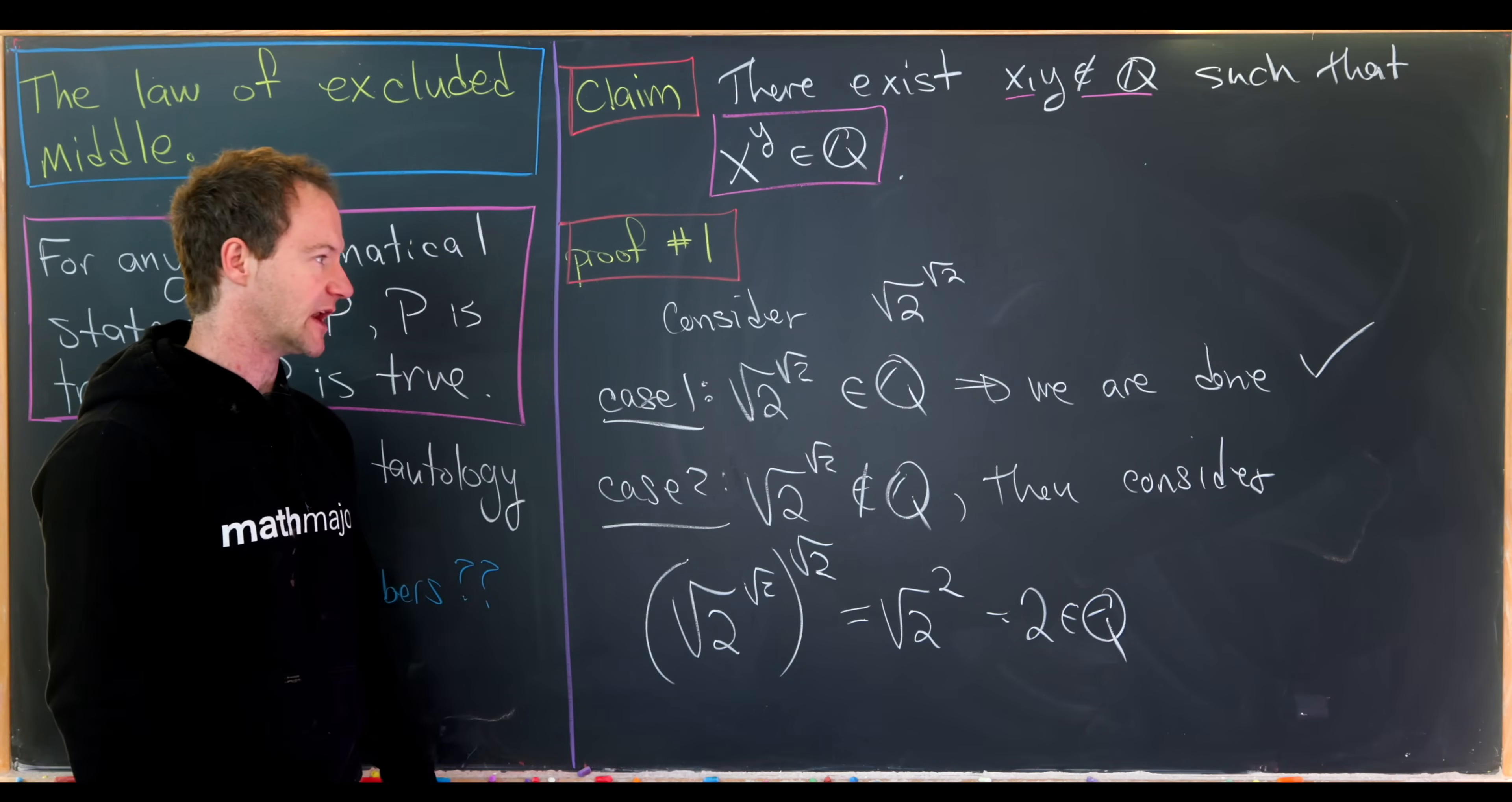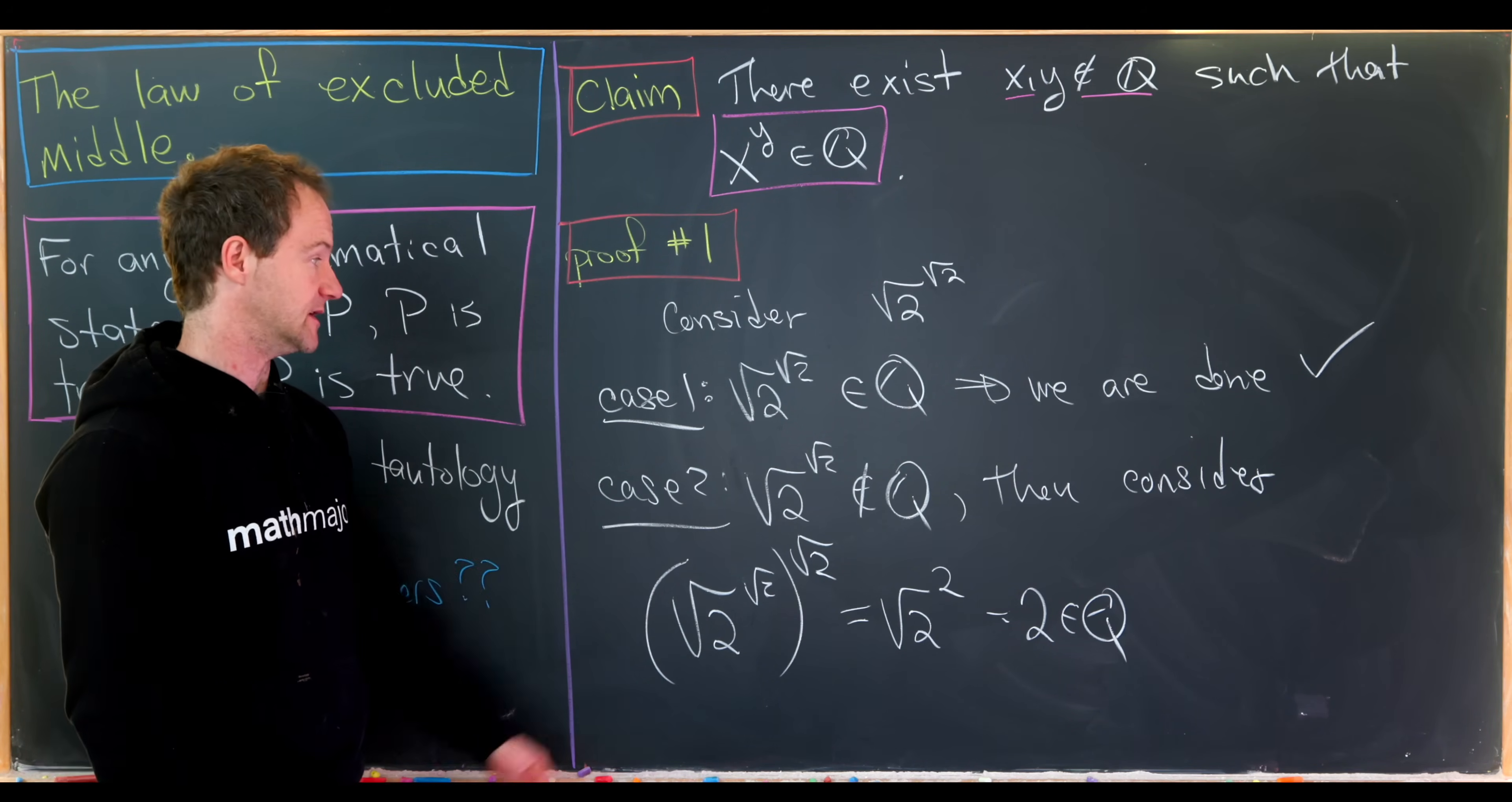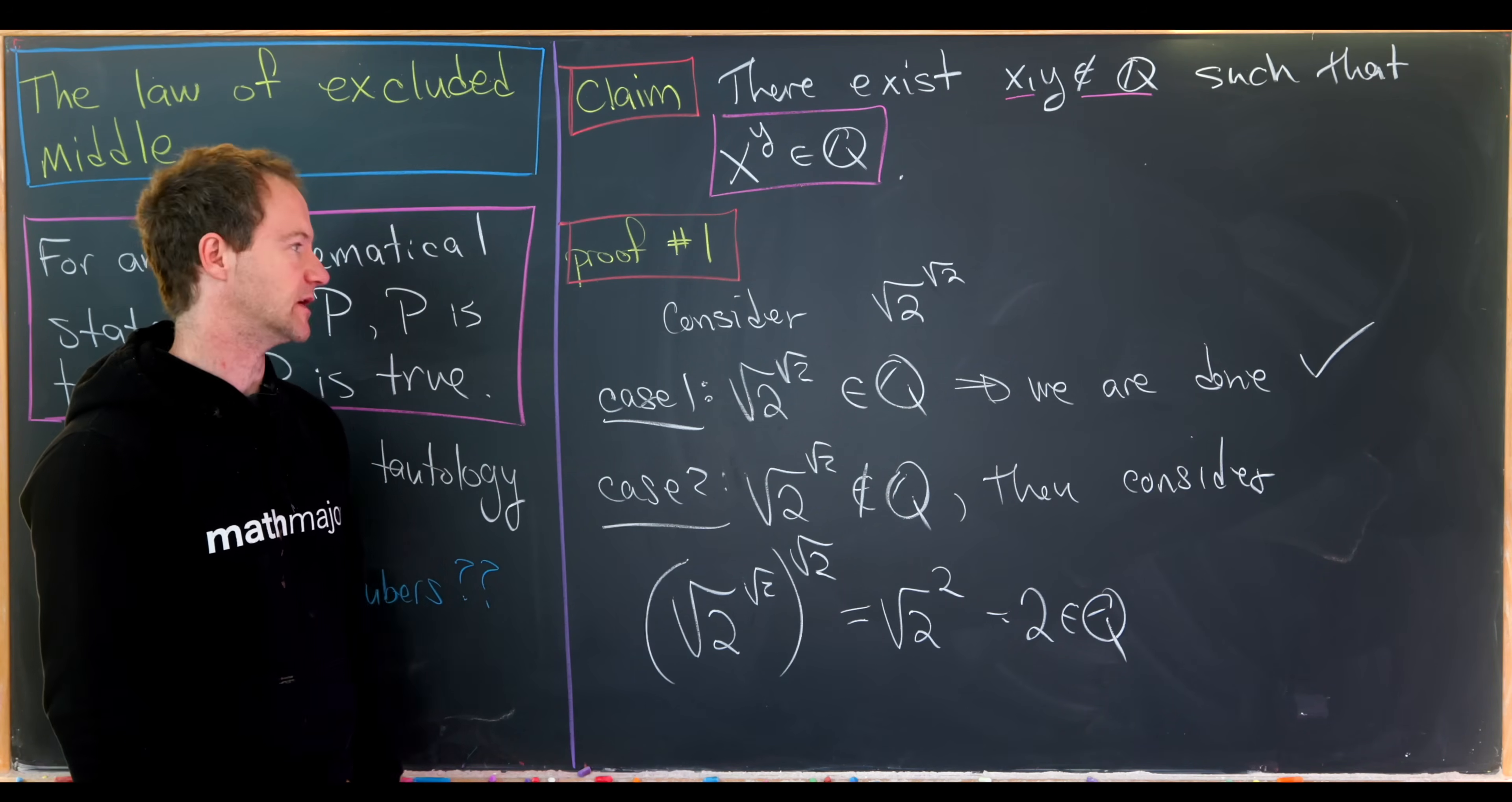So either way we look at it, we found an irrational to an irrational, which is rational. Now I'd like to point out that this is really non-constructive because looking at this proof, we don't know exactly which example gets us to the end. Is it the example in this first case or is it the example in this second case? So although we've narrowed it down to two different cases of numbers that are irrational to the irrational, which are rational, we don't know exactly which one fits the bill here.